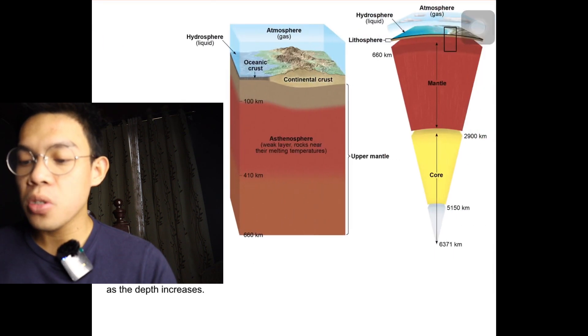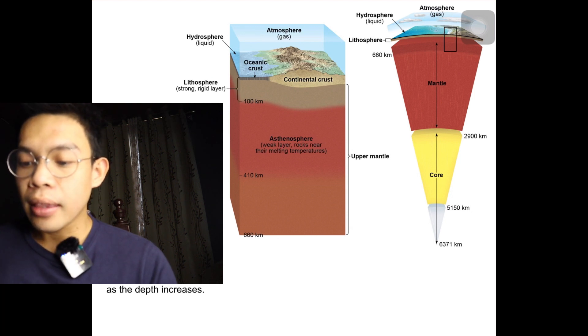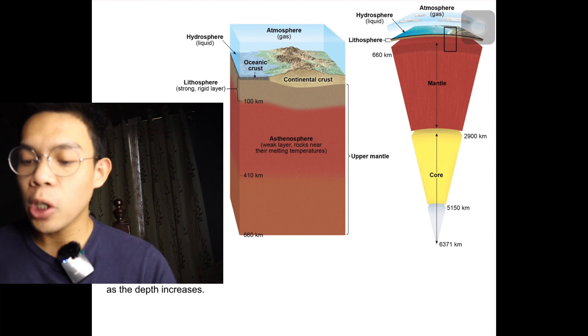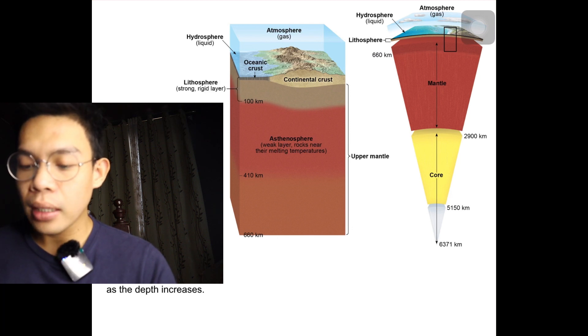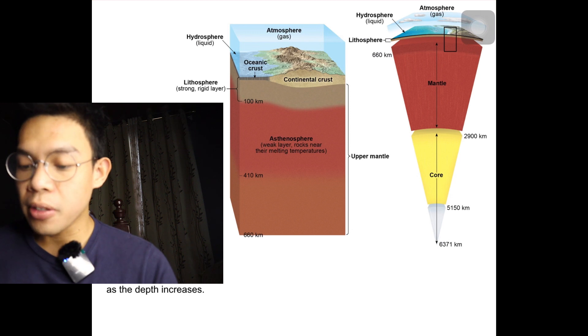The lithosphere includes the crust and a strong, rigid lower portion. The top of the upper mantle extends from the crust-mantle boundary of the lower part of the lithosphere to the top of the asthenosphere. The lithospheric mantle is composed mainly of a rock called peridotite, which is rich in iron and magnesium. The rock gets progressively weaker as depth increases.